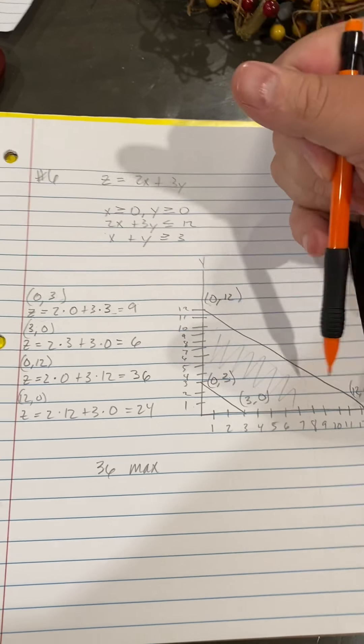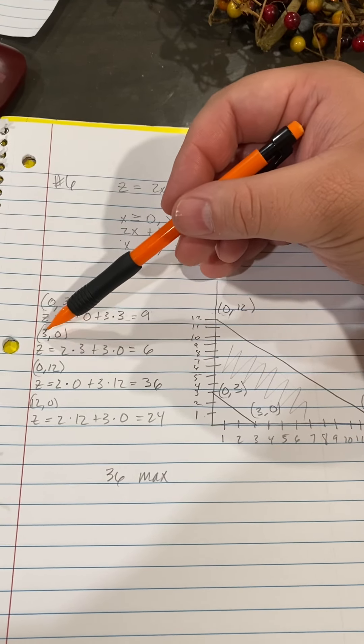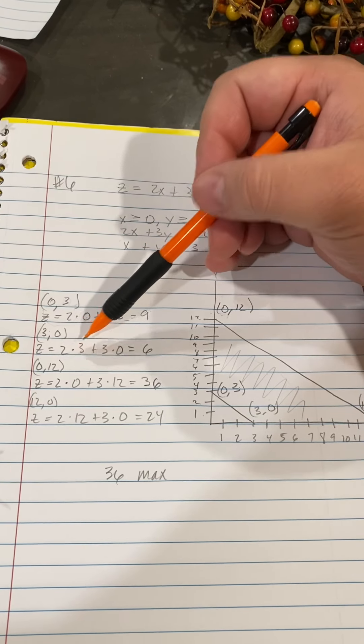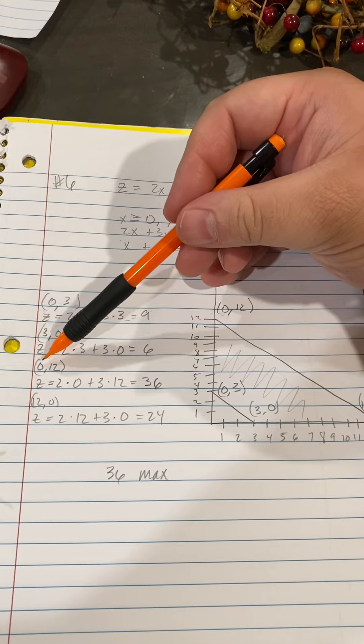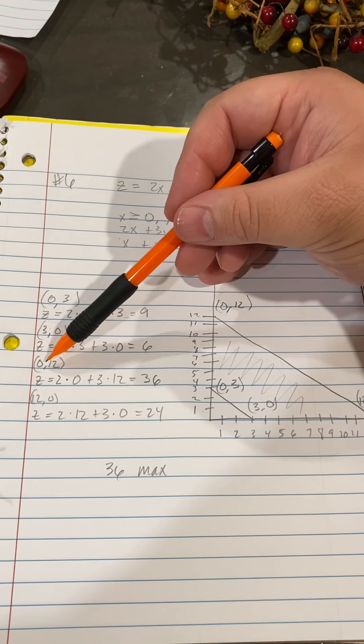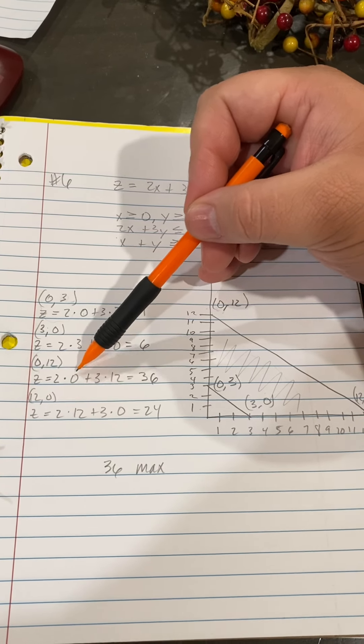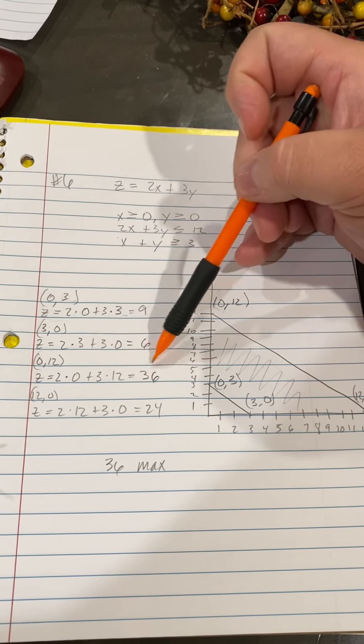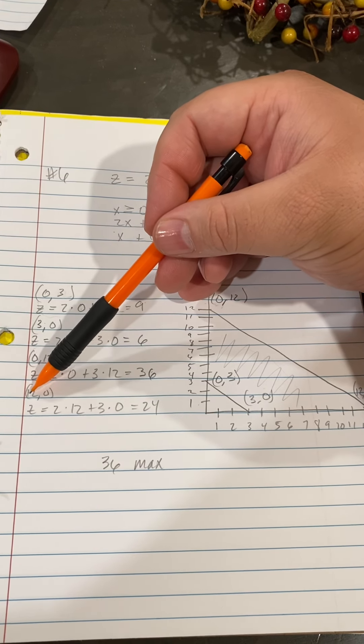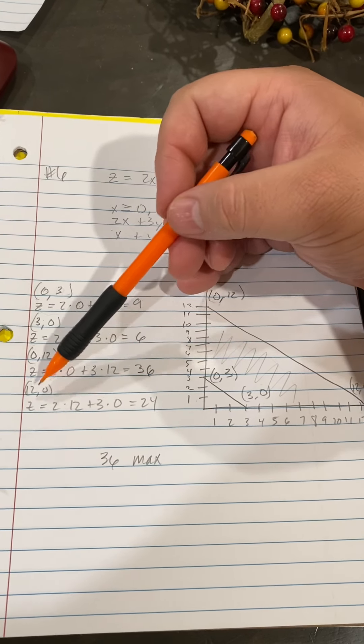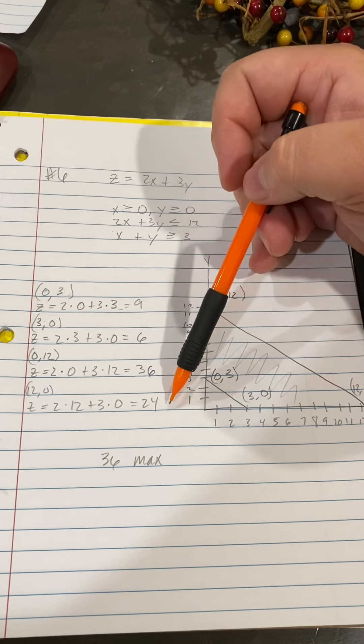Moving through the equation, I plug in: Z equals 2 times 3 plus 3 times 0 equals 6. Then I continue and do (0,12) for X and Y: Z equals 2 times 0 plus 3 times 12 equals 36. Z equals 2 times 12 plus 3 times 0 equals 24.